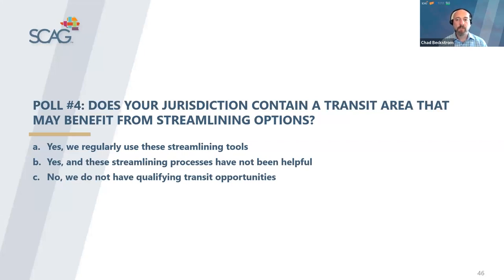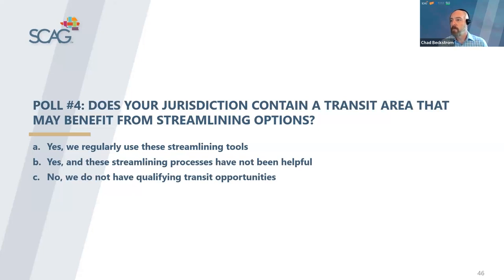Time for another poll: we'd like to know whether your jurisdiction contains any transit areas that may benefit from streamlining under SB 375 and/or SB 743, and if so, have you found these useful to streamline under CEQA? The results show a few are regularly using these — maybe you can tell us in the Q&A which agencies you are. It's equally split, with some finding these streamlining options have not been helpful. We'd like to hear from you on that. And then some of you do not have qualifying transit opportunities.